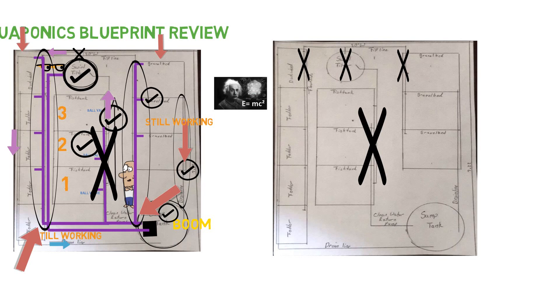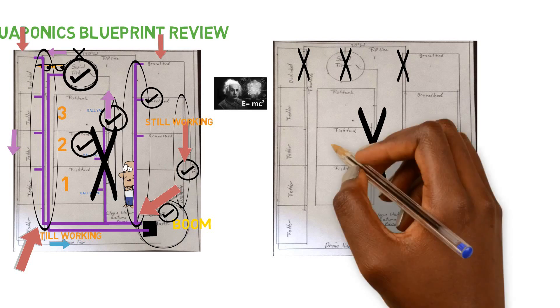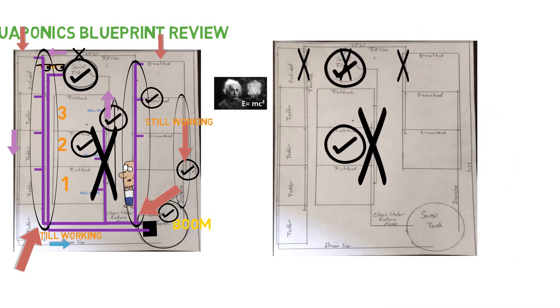I'm not just relying on every single component to work in order to get to the next phase of the swirl filter. So the fish tank has to work in order to get to the swirl filter. The swirl filter has to work in order to get to the gravel beds. And so I'm not just depending on that,